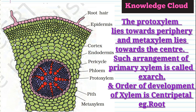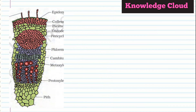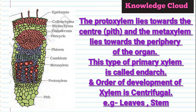It is the opposite in the endarch condition. In the endarch condition, the metaxylem is on the periphery side and the protoxylem is on the center side. You can see here that protoxylem develops first, then it is the metaxylem. So the development is from the center towards the periphery side, and we call this centrifugal development — meaning away from the center. The example of the endarch condition is the stem and the leaf.